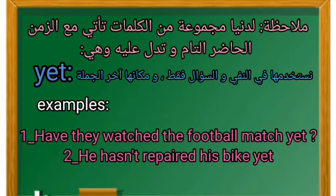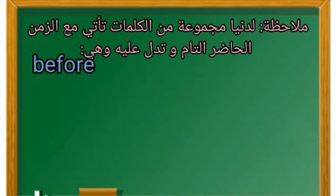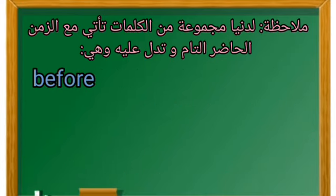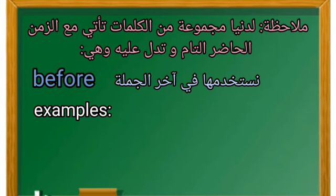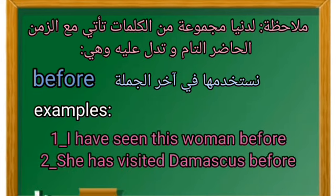Before: نستخدم كلمة before في آخر الجملة. مثال: I have seen this woman before — أنا قد رأيت هذه المرأة من قبل. She has visited Damascus before — هي قد زارت دمشق من قبل. هنا استخدمنا before في آخر الجملة.